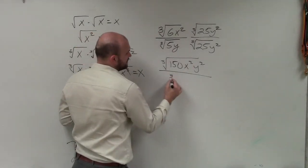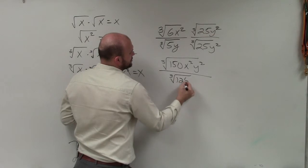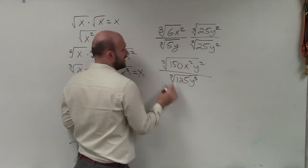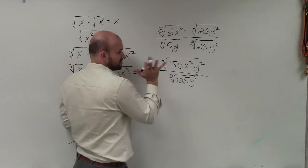And then I just multiply here, which I have the cube root of 125 times y cubed. Well, now I can take the cube root of 125, which is just going to be 5,